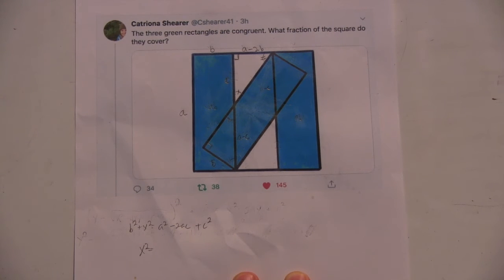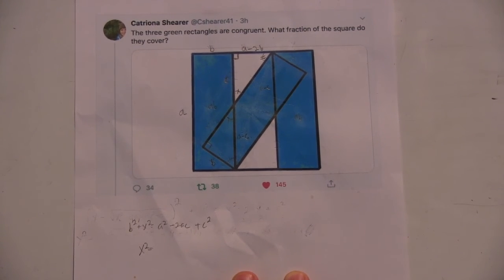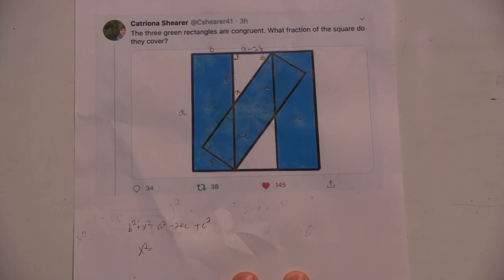And from there, then you have, you can probably find the side lengths of the triangles, and then get the unshaded area. Yeah. Yeah, okay. Well, you definitely are on the right track on how to solve it.